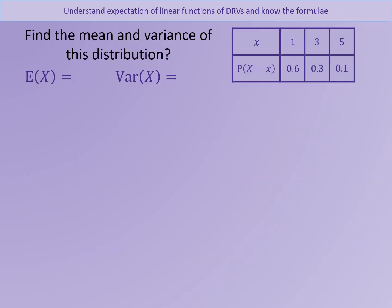Pause the video now and find the mean or expected value and the variance of this discrete random variable X. The expected value of X will have been 1 times 0.6, 3 times 0.3, and 5 times 0.1 added together, so we get 2. And then the variance of X, using the formula from last lesson — the expected value of X squared minus the expected value of X all squared — should have come out as 1.8.